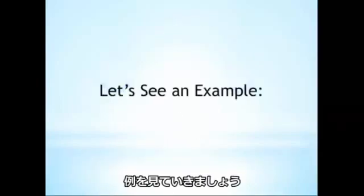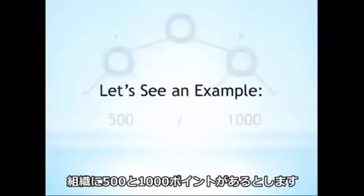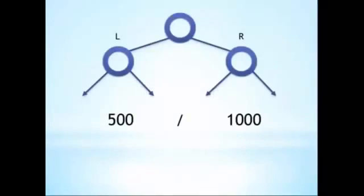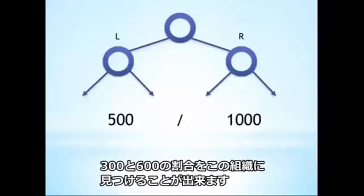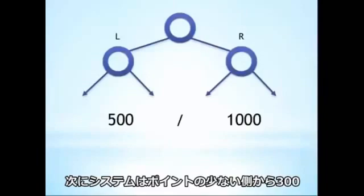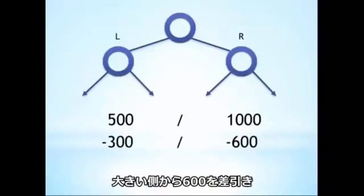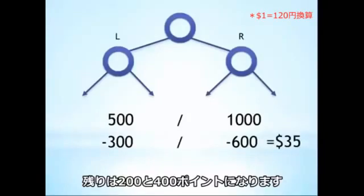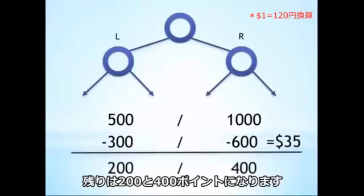Let's take a look at an example. Let's say that there's an organization that has 500 points on one side and 1,000 points on the other. Obviously, it's possible to satisfy the 300/600 ratio with these volumes. The computer will subtract 300 points from the lesser side and 600 points from the greater side, and pay out one cycle. That leaves 200 points and 400 points, respectively, in the tree.